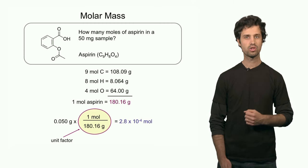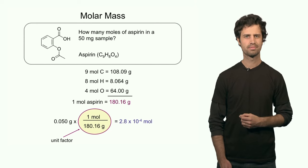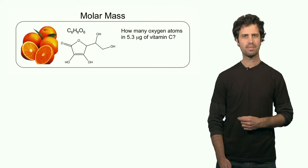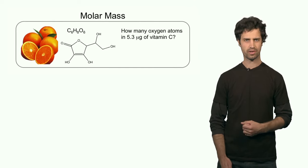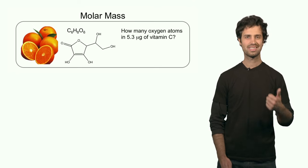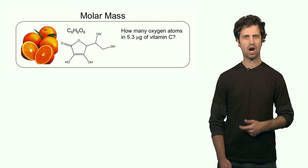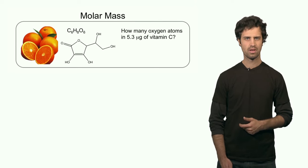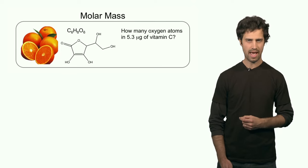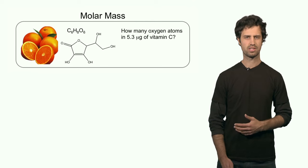This is a very useful relationship that we will be using over and over again. Let's look at another example — the molecule vitamin C. Vitamin C is also an organic molecule; it contains C, H, and O. It contains 6 carbons, 8 hydrogens, and 6 oxygens. Knowing this, I can calculate how many oxygen atoms I have if I have 5.3 micrograms of vitamin C.